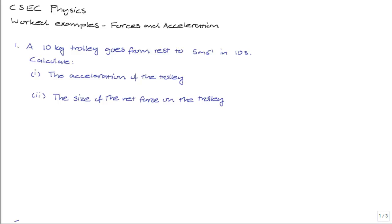So the first question says, a 10 kilogram trolley goes from rest to 5 meters per second in 10 seconds. So the information we're given is that the mass of the trolley M is equal to 10 kilograms.